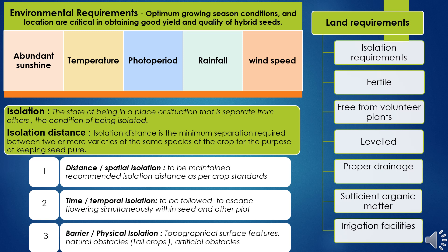Isolation is the prime requirement in hybrid seed production. Isolation refers to the state of being in a place or situation that is separate from others. The hybrid seed production field should be at the standard recommended distance for the specific crop. Isolation distance refers to the minimum separation required between two or more varieties of the same species to keep seed pure and of desired quality.